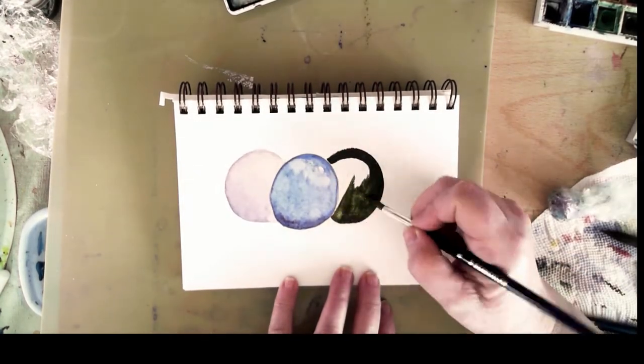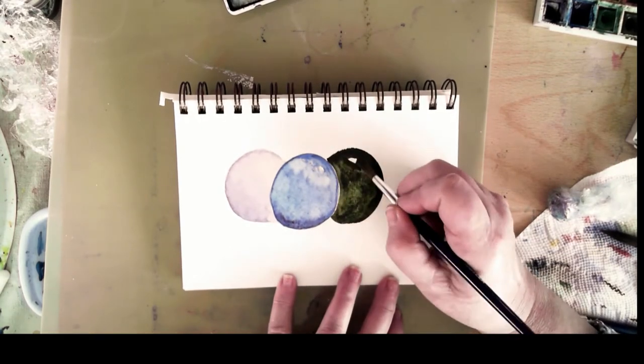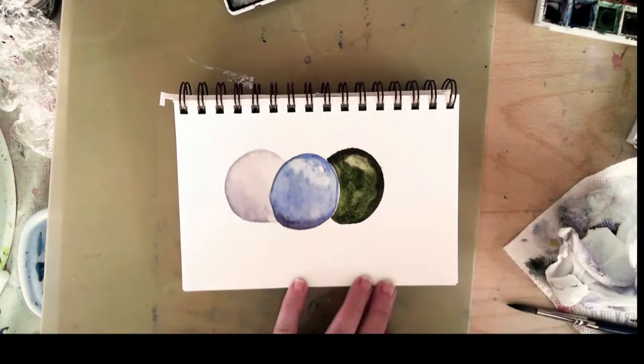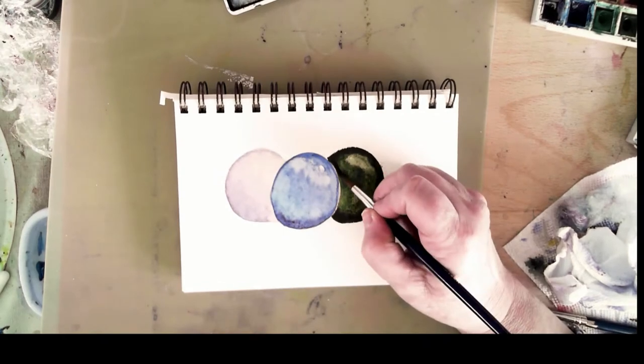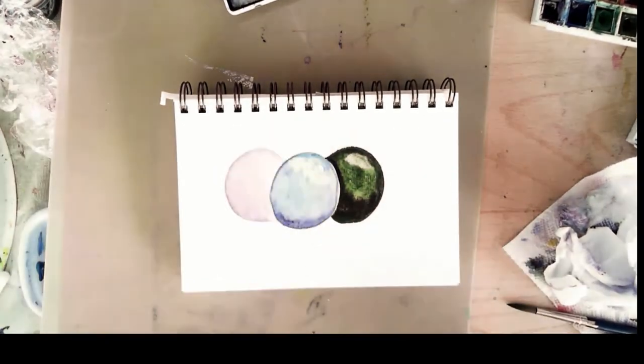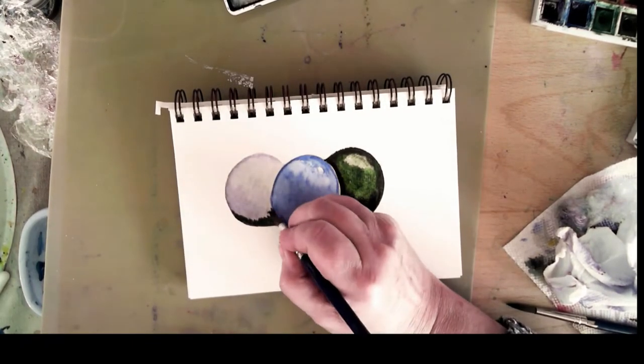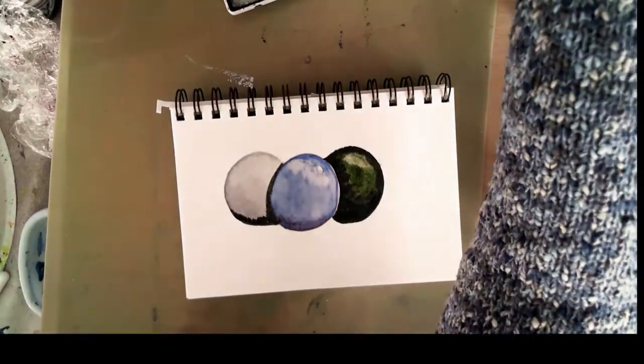A little pointer when you're using paper towel to blot areas on a wet painting. Be careful that you don't leave an impression from any of the texture on the paper towel. That can happen, and sometimes you might not notice it until your painting is finished. And so I try to keep that in mind. Some people will use a Kleenex or a piece of tissue that doesn't have any texture on it.